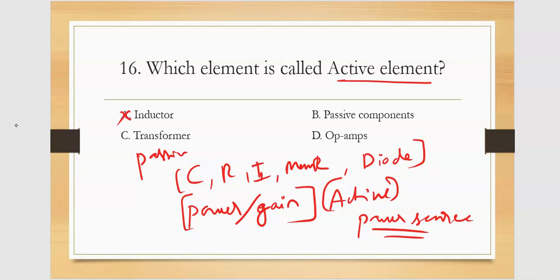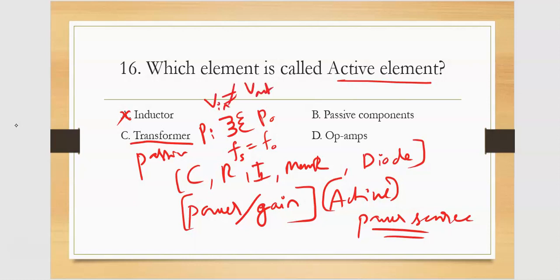Is transformer active? Transformer is interesting: power input equals power output — power remains constant. Frequency also remains constant; frequency input equals frequency output. Power and frequency are constant. The only varying term is voltage — voltage input versus voltage output, which is step up or step down. Passive components — opamp has a gain factor. Transistor is an active element. So opamp is the right answer as an active element.